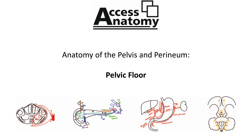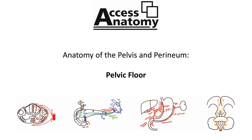Finally, the anteroinferior wall of the pelvic cavity is formed by the pubic symphysis and the superior and inferior rami of the two pubic bones. Remember that in the anatomical position, the pelvic girdle is tilted anteriorly, so that the anterior superior iliac spines and the pubic symphysis are in the same vertical plane. This arrangement means that the weight of the bladder is supported by this anteroinferior wall.